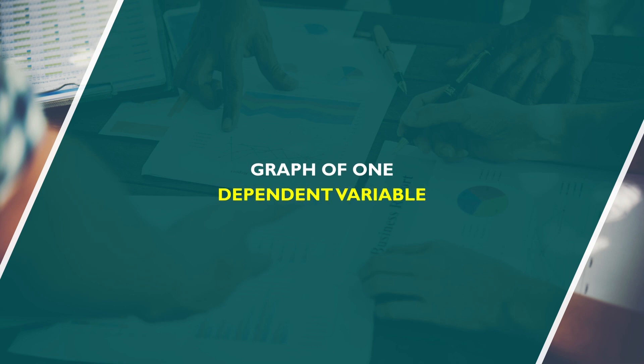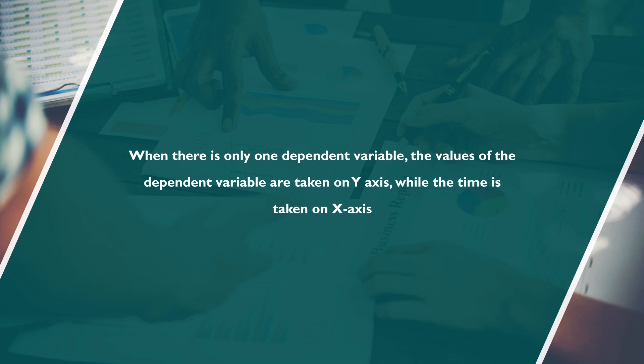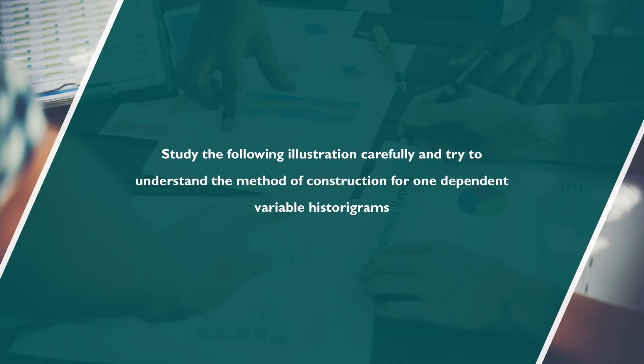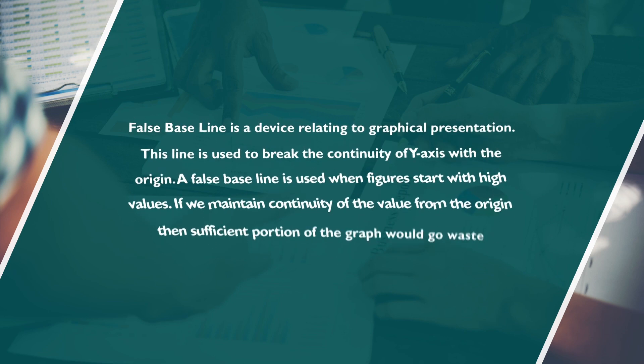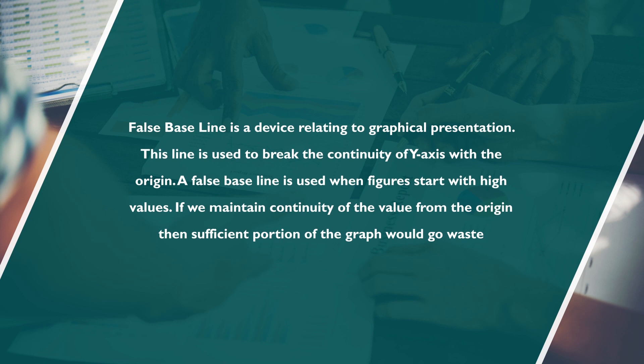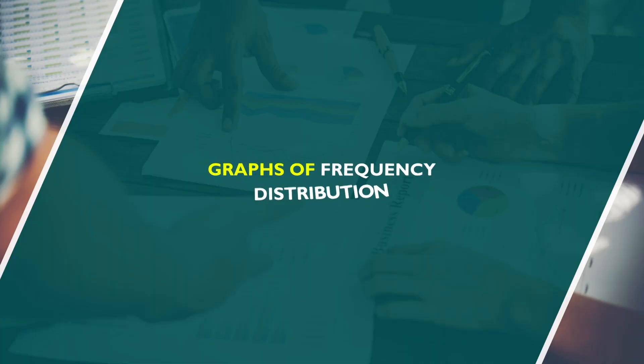When talking about the graph of one dependent variable, the values of the dependent variable are taken on the Y-axis while time is taken on the X-axis. We will study certain examples to understand methods of construction for a one dependent variable histogram. There is also the concept of a false baseline — a device relating to graphical presentation. This line is used to break the continuity of the Y-axis with the origin, and is used when figures start with high values to avoid wasting graph space.